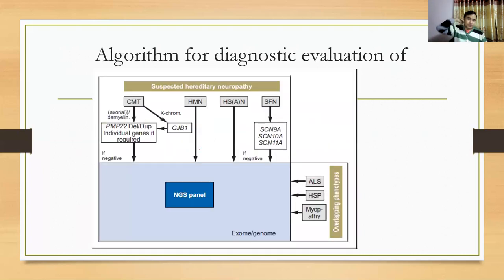The algorithm for diagnostic evaluation of CMT is: take a proper history; if thinking of CMT1A with a demyelinating pattern, do PMP22 testing; if it shows an intermediate pattern, do MPZ testing; if it shows an axonal pattern, do GJB1 first — this can reduce the cost of the evaluation.